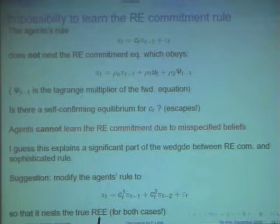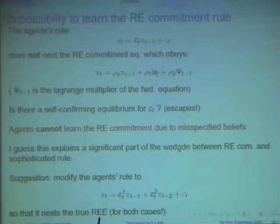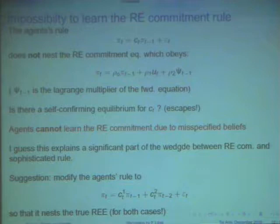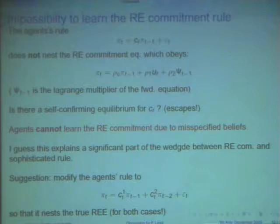So, I think agents in this setup cannot learn the rational expectation commitment. My guess is that, if they do what Frank suggested in his last slide, so, always give the agents a second-order autoregression, which nests both the simple case, because in the simple case, c2 is just equal to zero, and this sophisticated case, and try, just to see if I'm right or wrong, try without discounting, and let them run for 20,000 periods. I think you get exactly the commitment equilibrium.